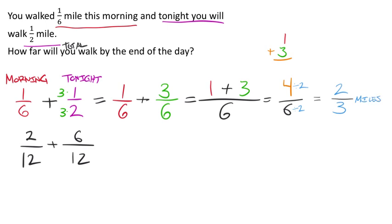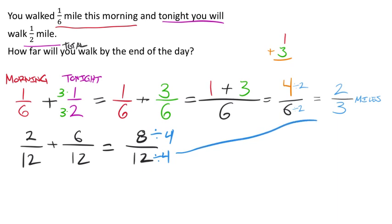The answer is two-thirds miles. We need to label it — the problem was about miles walking, so we write miles. Be careful: writing just 'walked' without units would cost points. If you used twelfths, you'd get eight-twelfths, which also simplifies to two-thirds — confirming that using the lowest common denominator versus not doesn't change the final answer.